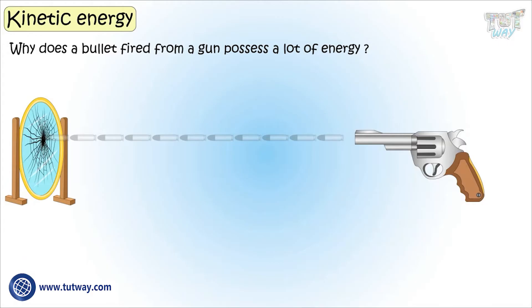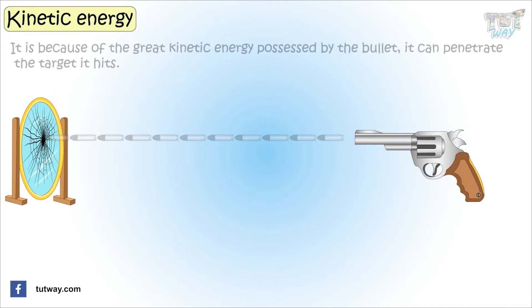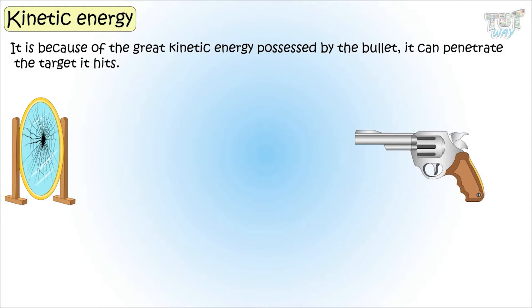Why does a bullet fired from a gun possess a lot of energy? It is due to its motion or fast speed. It is because of the great kinetic energy that it possesses that it penetrates the target that it hits.